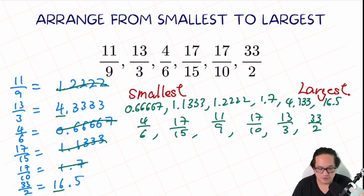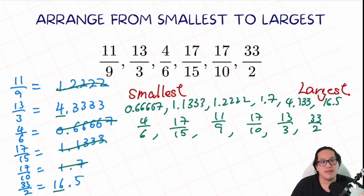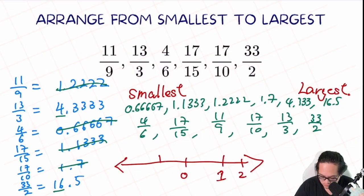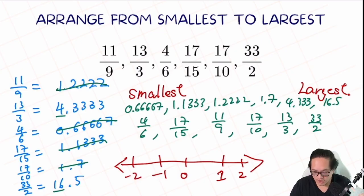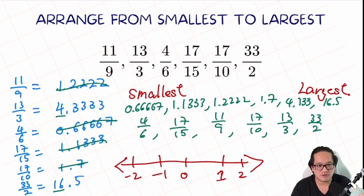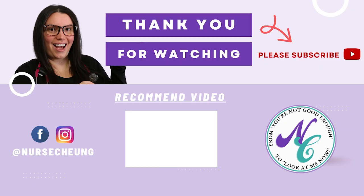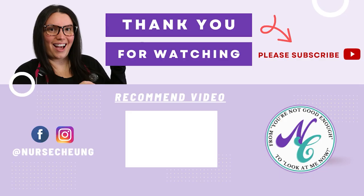And just like that, we're done — super quick and super easy. All you need to do is convert every single number to decimal, then compare unit by unit. Don't forget the negative number rule: the bigger the number on the negative side, the smaller they are. Draw a number line if you need help. That's everything you need to know for comparing and ordering rational numbers. If you have any questions, leave them below. Head over to nursechownstore.com for additional resources to help with your ATI exam. Catch you on the next video!